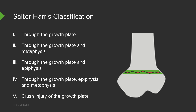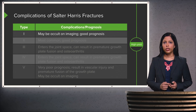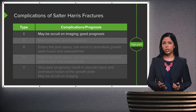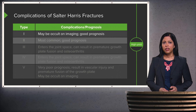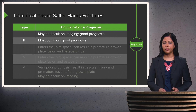A Salter-Harris V fracture can go right through the growth plate, but it's more of a crush injury to the growth plate. A Salter-Harris I may actually be occult on imaging, but it has a very good prognosis. The Salter-Harris type II is the most commonly occurring Salter-Harris fracture, and it also has a good prognosis.